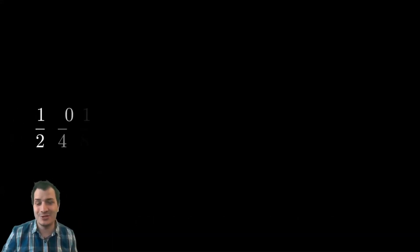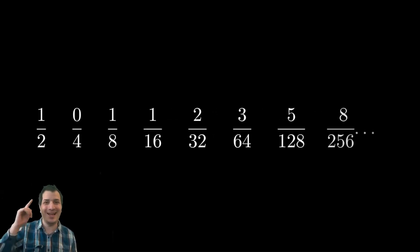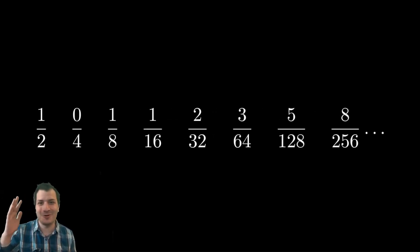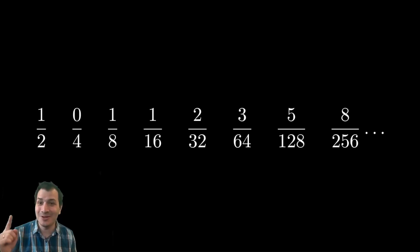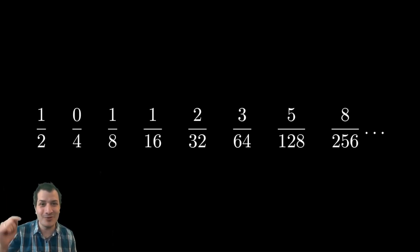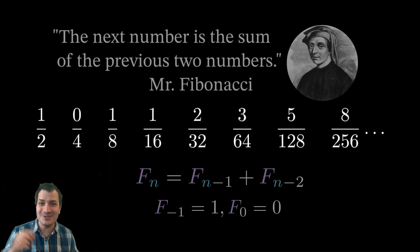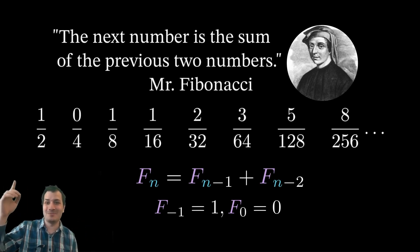I came across a probability problem, originally invented by another YouTuber, where this sequence of fractions comes up. It starts out very simply: a half, zero quarters, one eighth, one sixteenth. But then things get exciting when you realize the pattern — two thirty-seconds, three sixty-fourths, five one-twenty-eighths. These are the Fibonacci numbers in the numerators.